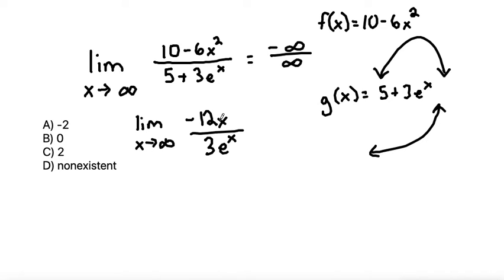Okay, from here, what can we do? We can check on our top function and our bottom function a second time. Here we have negative 12x as the numerator function, so now let's take this as a separate problem.